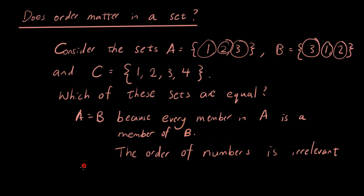A does not equal C because obviously the number 4 is not in A, and B is also not equal to C because it doesn't have number 4 either. Hope this quick video helps clear things up. Thanks for watching. See you next time.